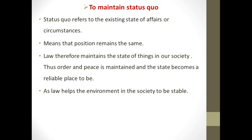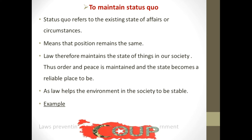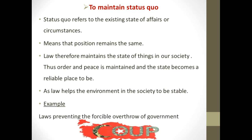Law helps the society and environment to remain stable. For example, laws prevent the possible overthrow of government. Imagine if anyone could remove and overthrow the government at any given time — no formal government would exist, as governments would be overthrown frequently, new ones would come, and the cycle would repeat itself. Thus even productivity in our nations would be hard to witness. Law is therefore important in maintaining the state of things in the society.